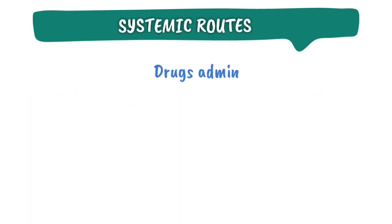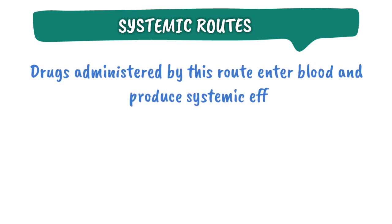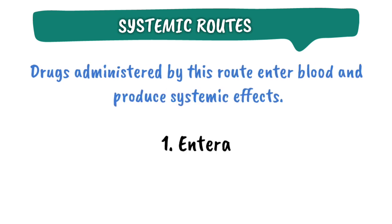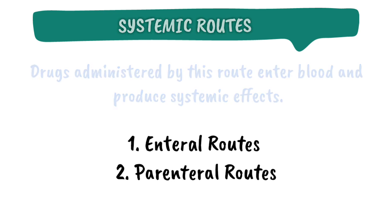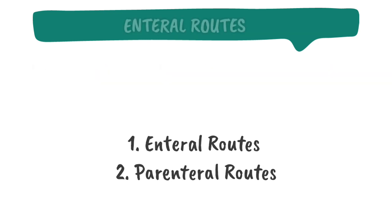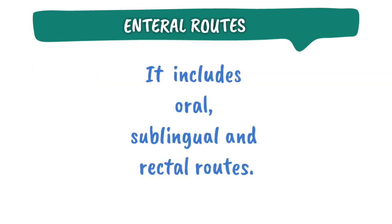Systemic routes. Drugs administered by this route enter the blood and produce systemic effects. It is composed of enteral routes and parenteral routes. Enteral routes include oral, sublingual, and rectal routes.